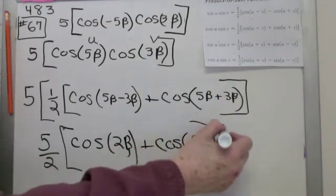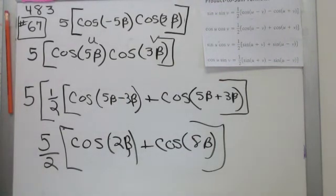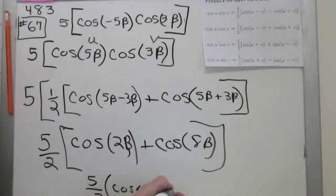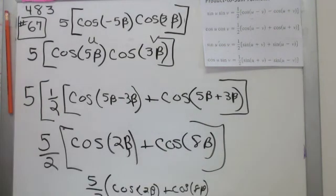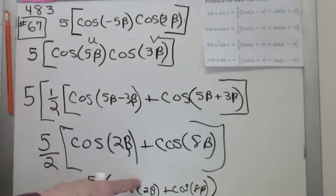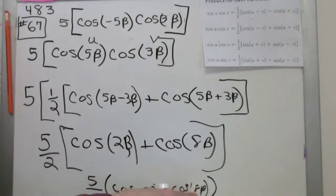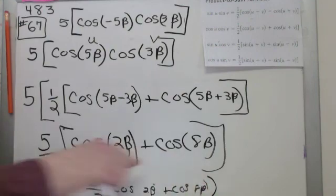And then I think I'm done. I am. Sometimes the textbook will just write it using now just a simple parenthesis rather than a bracket. Cosine 2 beta plus cosine 8 beta. And we're done using the formula. So there you go. And probably you don't need those parenthesis if you don't want them. Makes it look a little bit neater. What do you think?